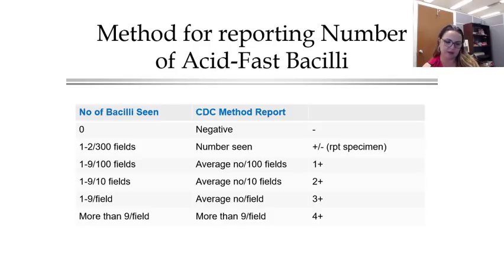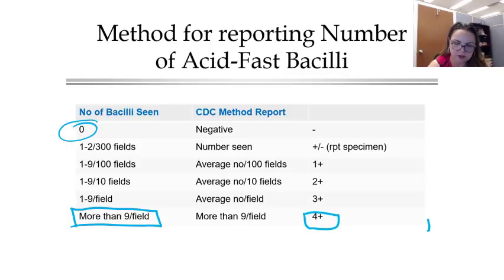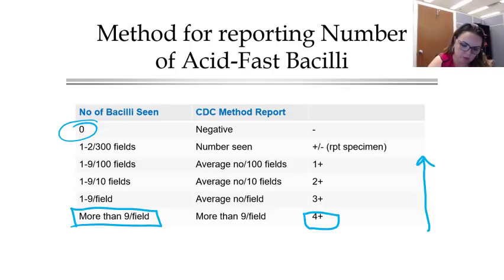Here's the method for reporting and grading. When looking at an acid-fast stain, if you don't see any bacilli, it's negative. But if you see more than nine bacilli per field, that's a four-plus patient. As the patient is being treated, you'd like to see the number of bacilli go down. There's a method for reporting where you report the number of bacilli seen per the number of fields investigated.